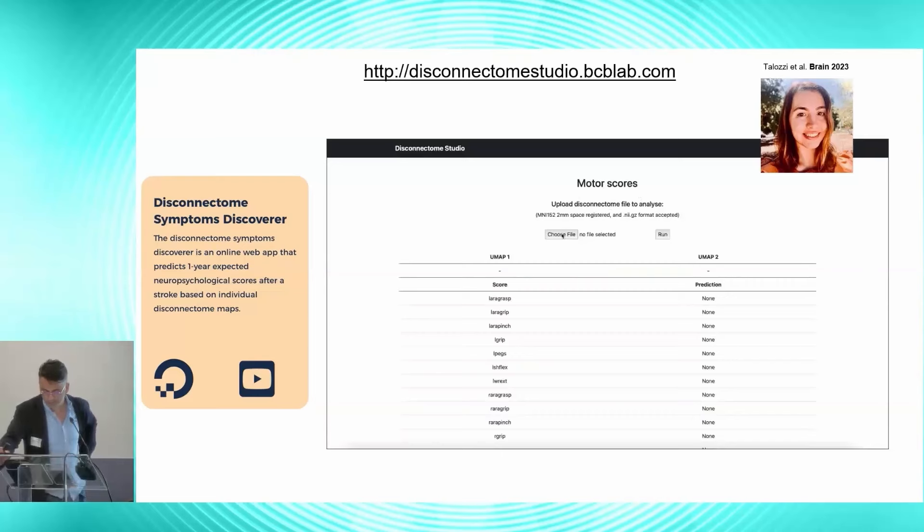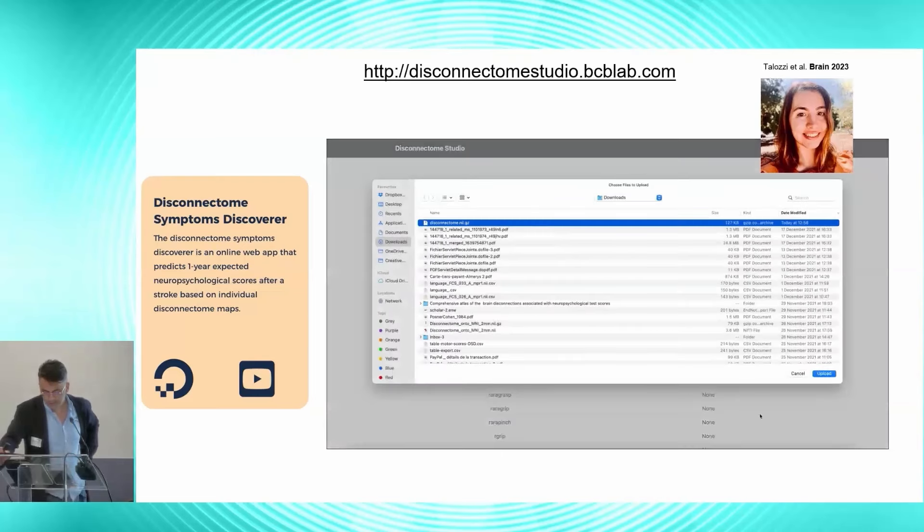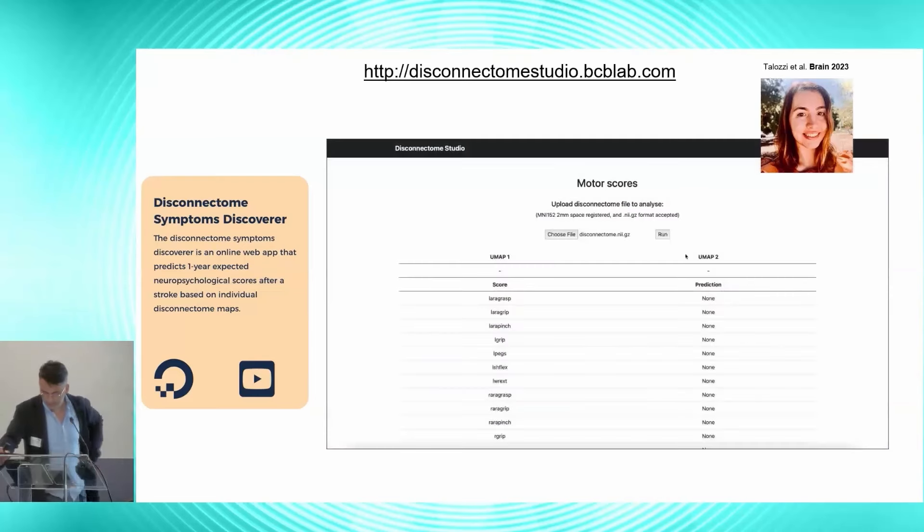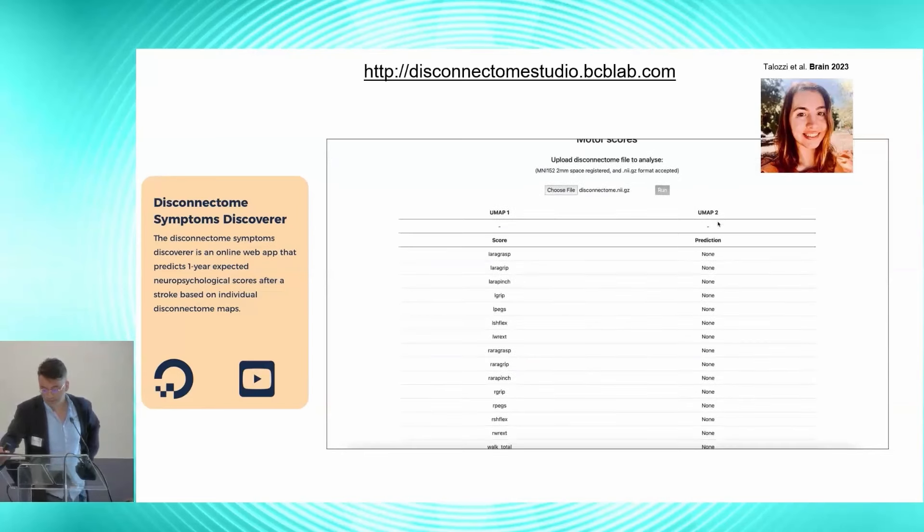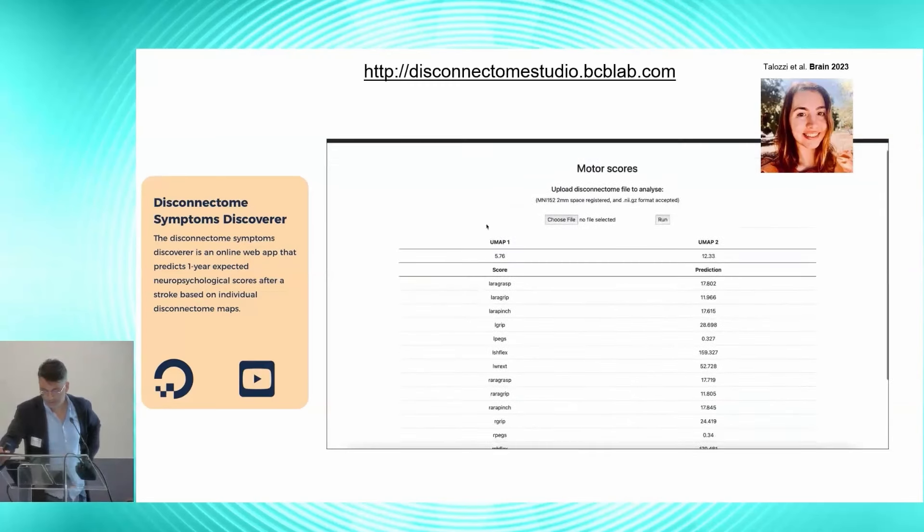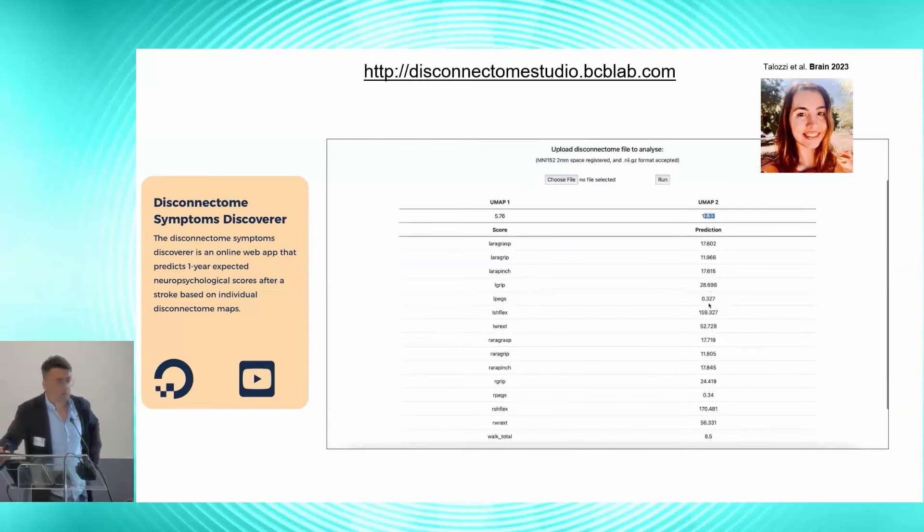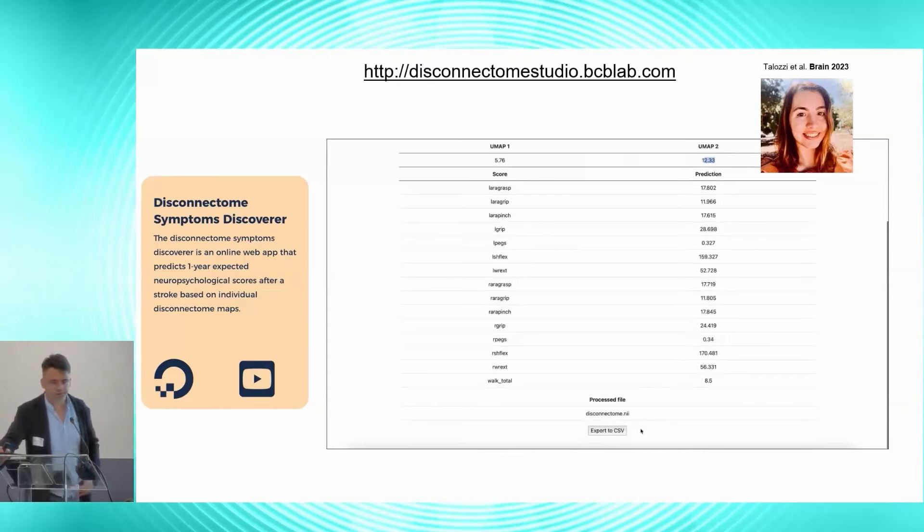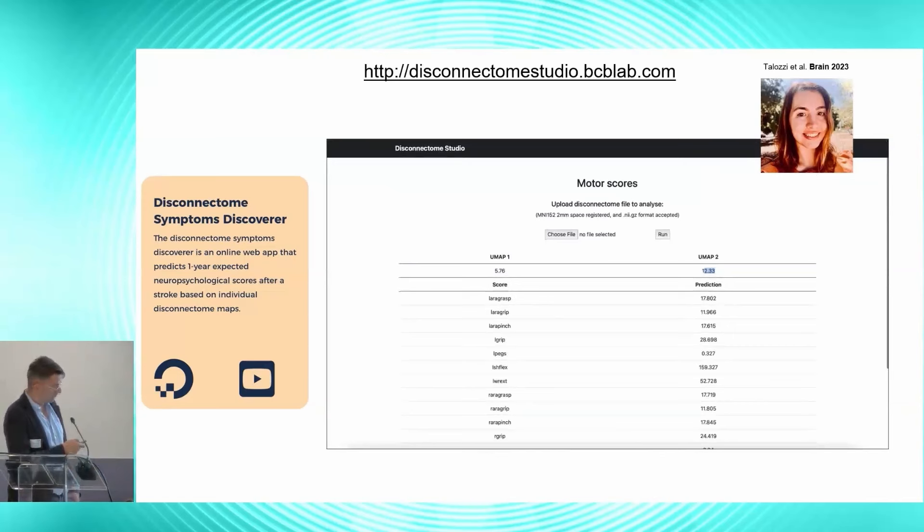And to make it convenient, we also created a website where people can just upload that disconnectome, press run and have directly the predicted outcome one year after the lesion. So here is an example for the motor score. Just upload your disconnectome that you calculate with a BCB toolkit. You press run. It's going to take you a minute. It will give you exactly the coordinate inside the UMAP space that I showed to you and the prediction for the symptoms. Those are different motor outcomes. There you go. This is actually quite fast. And we do that also for language, visuospatial, memory, and so on and so forth. It's all free, although it does cost us 20 euros a month to maintain it.